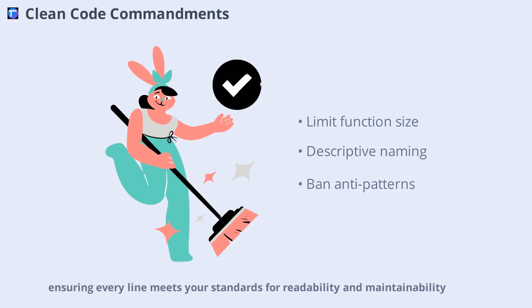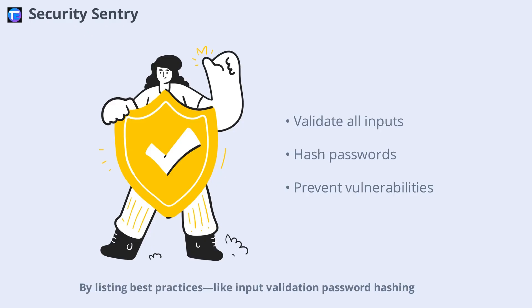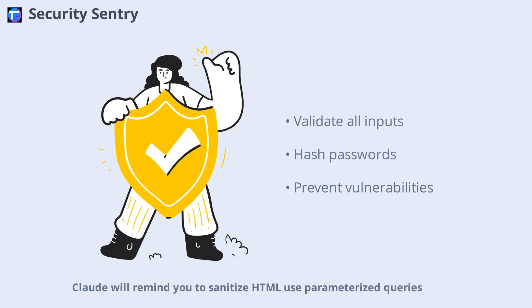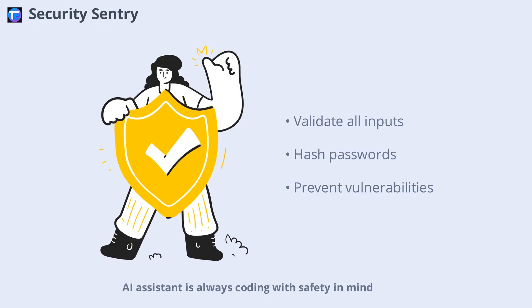Security is non-negotiable, and the Security Sentry entry turns Claude into your vigilant guard. By listing best practices like input validation, password hashing, and safe database queries, you ensure vulnerabilities are caught before they reach production. Claude will remind you to sanitize HTML, use parameterized queries, and avoid risky packages. In my projects, this entry led to Claude proactively suggesting security improvements and refusing insecure implementations. Update this section as new threats emerge.